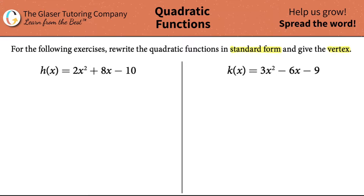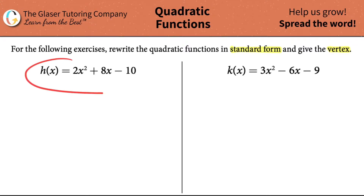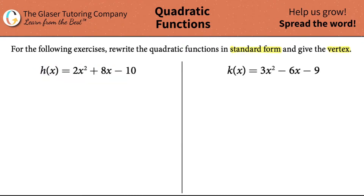The first thing we should notice is that quadratic functions always have the highest power of x squared. So if you have an x squared in your function, it's a quadratic function. The basis of quadratic functions is given in its formula. We'll do the first one on the left-hand side: h of x equals 2x squared plus 8x minus 10.